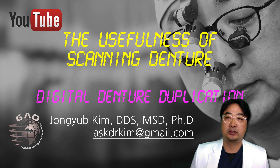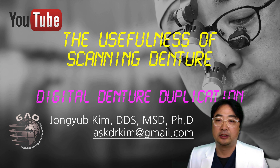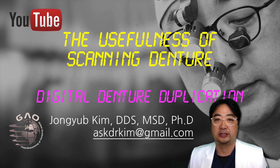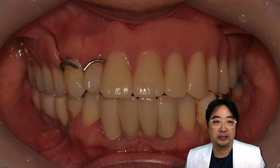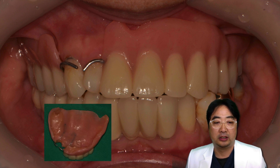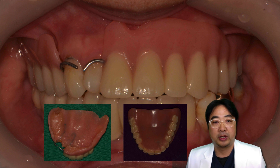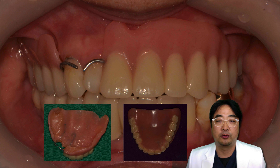I used the intraoral scanner and 3D printer for denture duplication. This is an example of the advantage of denture duplication. I had a patient who I delivered the interim partial denture five years ago, and recently the patient came back with a complete denture — a converted complete denture from the interim partial denture. So now I need to make a new complete denture for this patient.